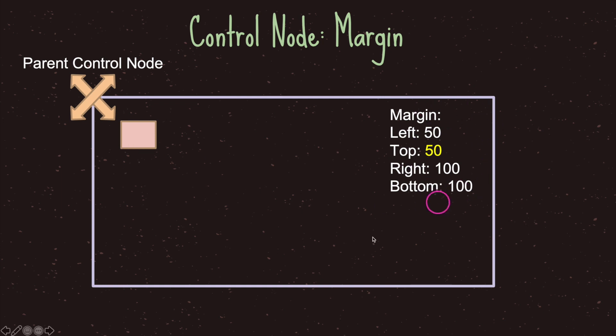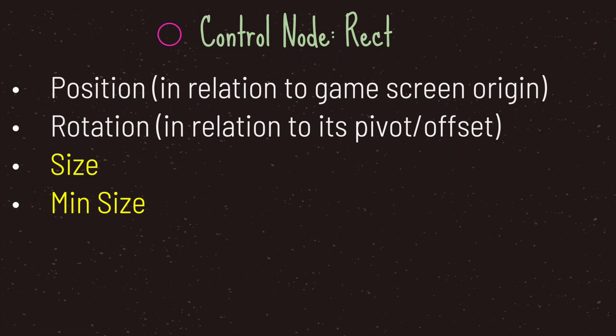Keep in mind that when you affect margin, you are also going to affect the rectangle values and size. The third thing to understand about the control node is its rectangle properties. Try to understand these four: position, rotation, size, and minimum size. The position property is not how many pixels to adjust from the anchor — instead, it is relative to the game screen's origin.